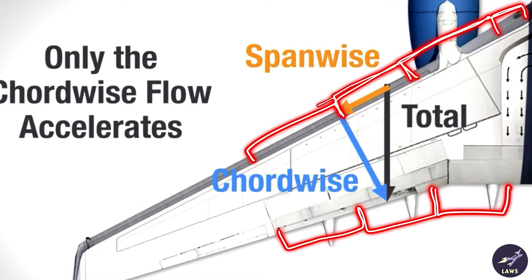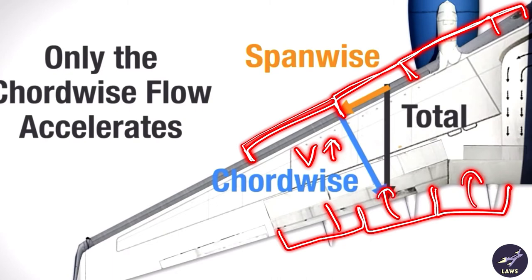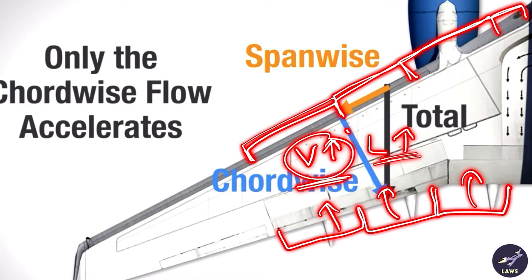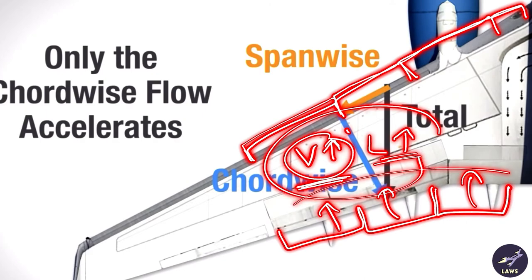Once the aircraft speeds up, velocity increases and these high-lift devices can be retracted. The increase in velocity will increase lift. During takeoff and landing, these high-lift devices are used.